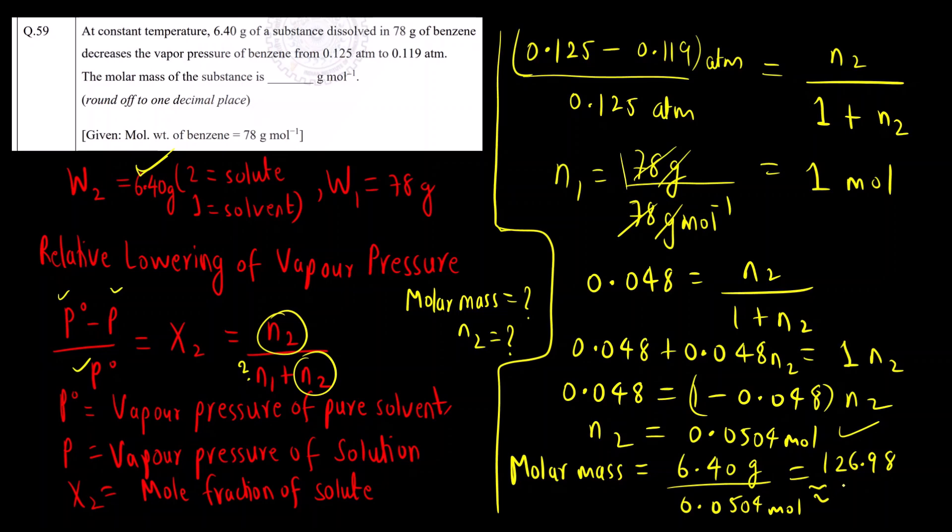I can round off to one decimal place as they have told. So 127.0 is the final answer. If you see the range that they have given, it is 126.0 to 128.0. Any value in between 126.0 to 128.0, our answer is 127.0. The final answer is 127.0 grams per mole.